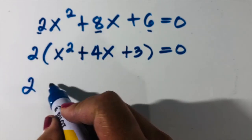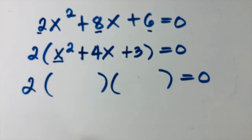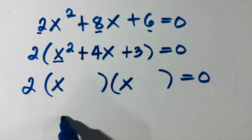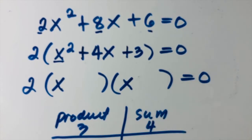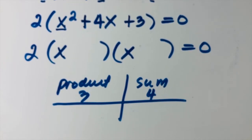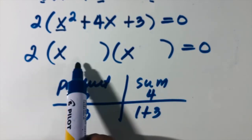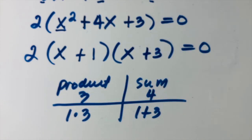After factoring out the GCF, we check the coefficient of x squared — a is 1. So we use the product and sum method. The factors of x squared are x times x. The products of 3 that give a sum of 4: 1 times 3 equals 3, and 1 plus 3 equals 4. So the other two numbers are positive 1 and positive 3.